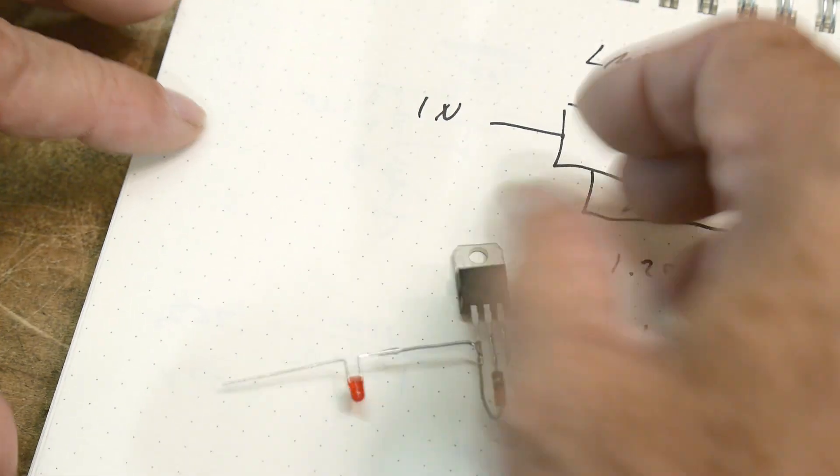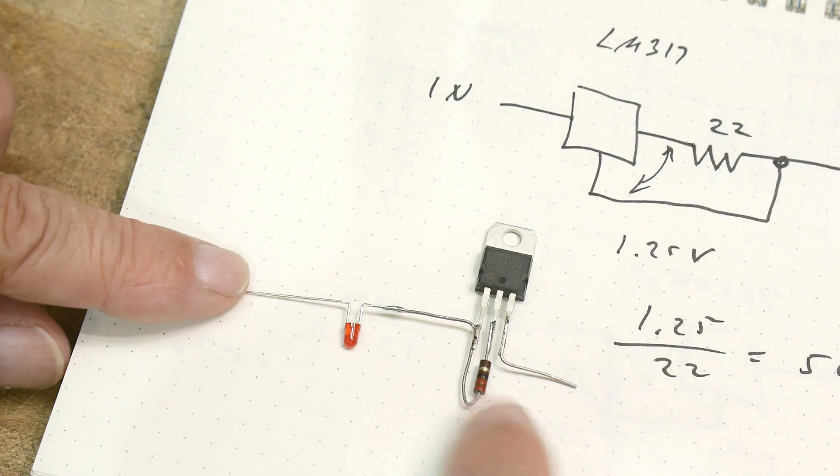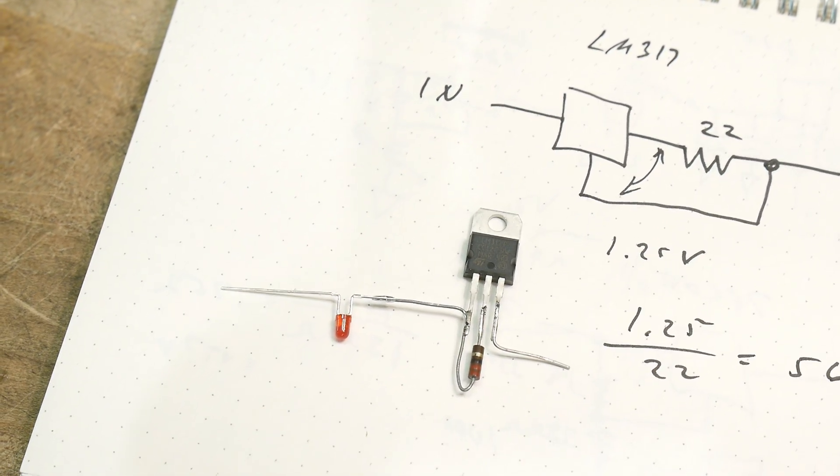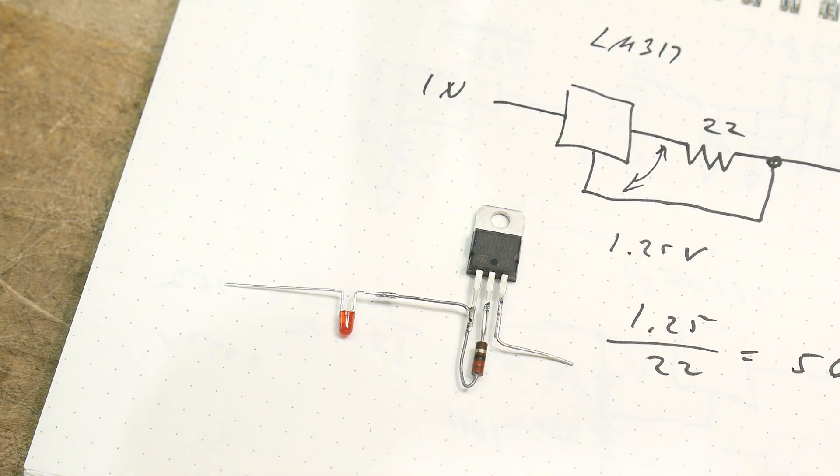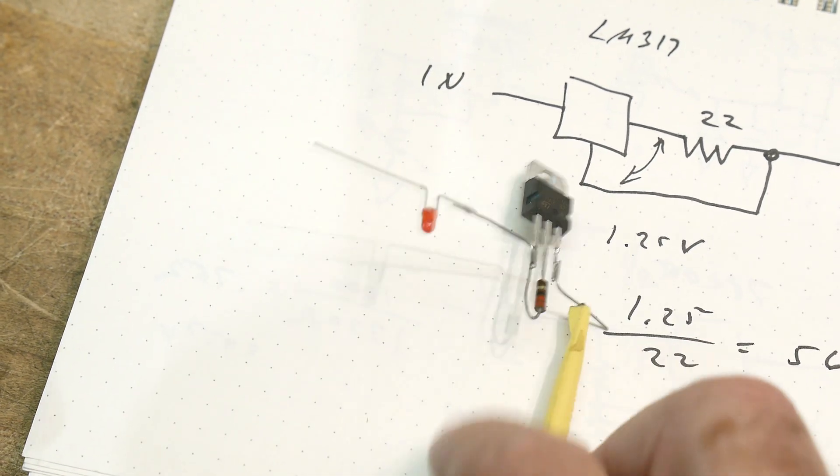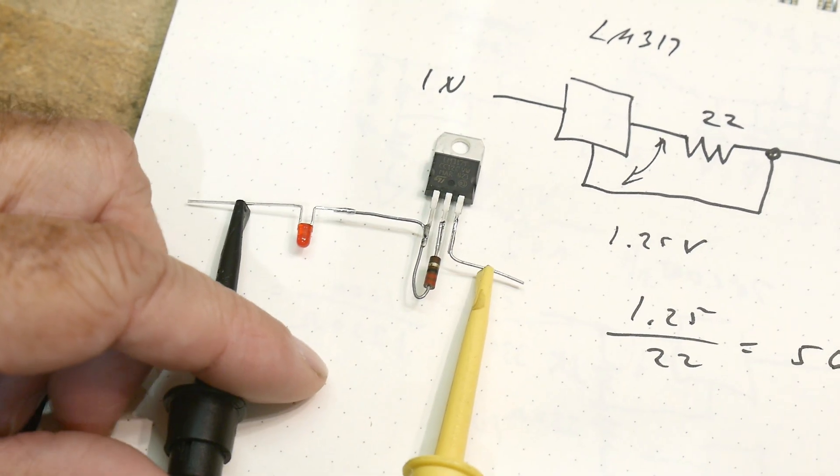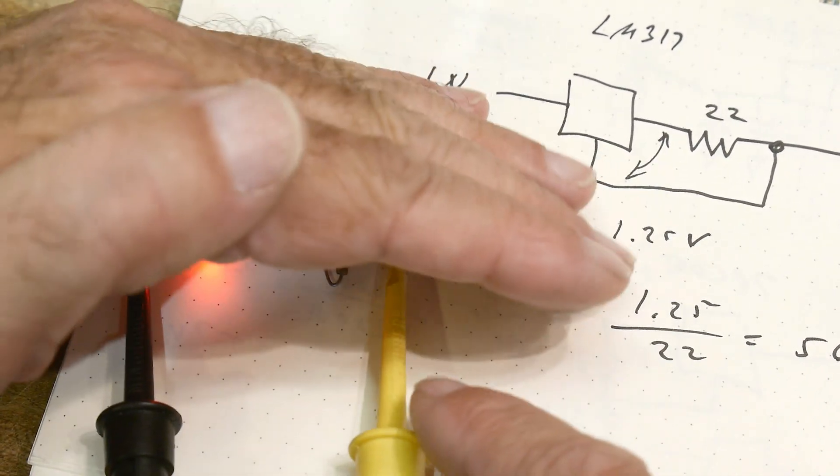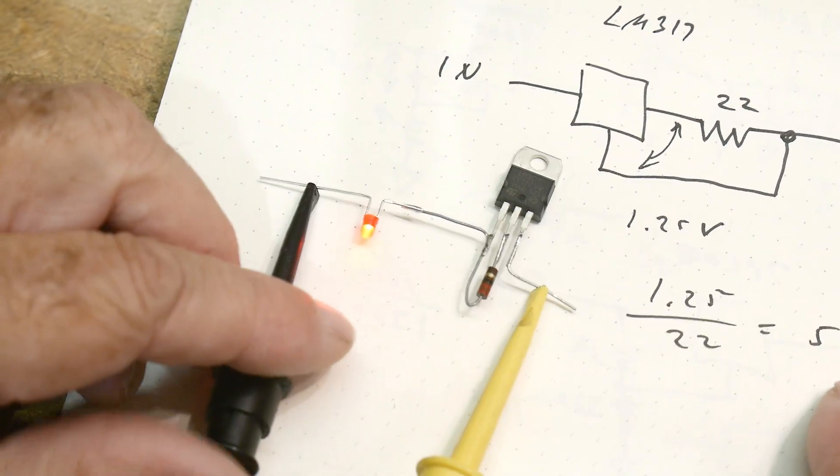I built one up right here. So this is our 22 ohm resistor. I have an LED in here. So if we take input and we ground the output and we turn the power supply on, the LED lights up and it doesn't burn out because it's 56 milliamps.